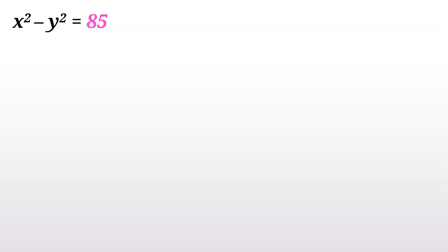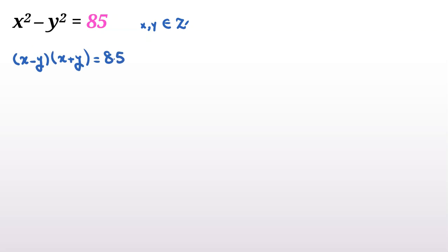We want to solve x squared minus y squared equals 85, where x and y are integers. We use the famous identity: x squared minus y squared equals x minus y times x plus y, and this product equals 85.